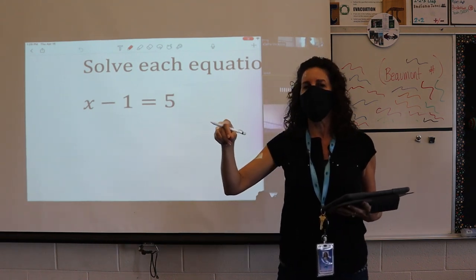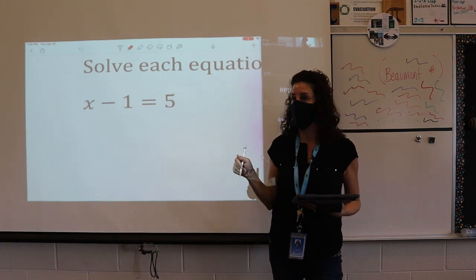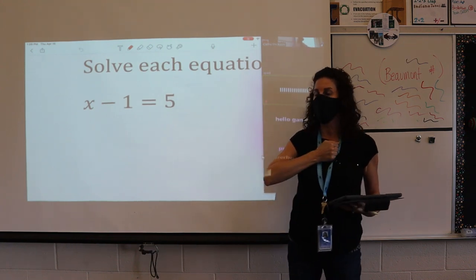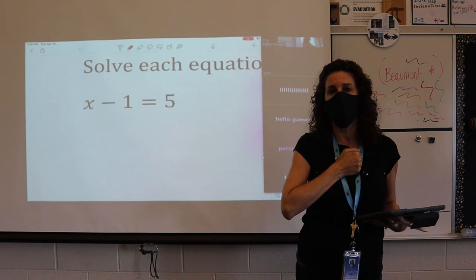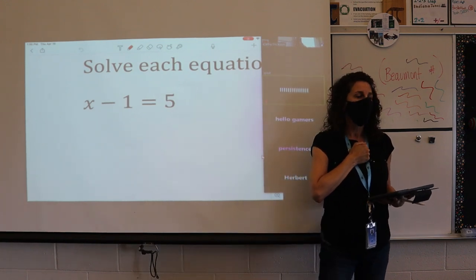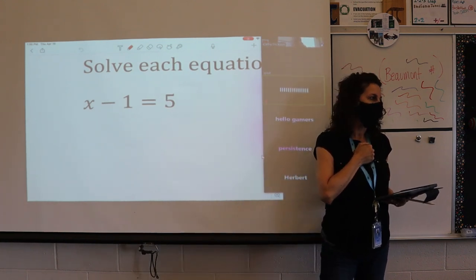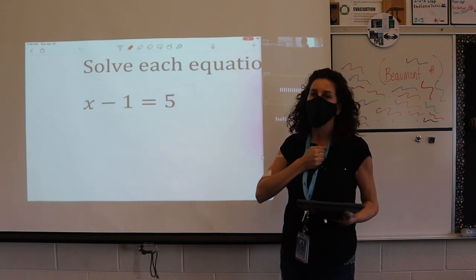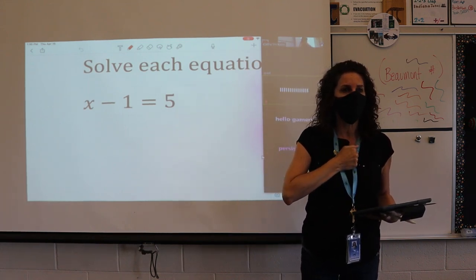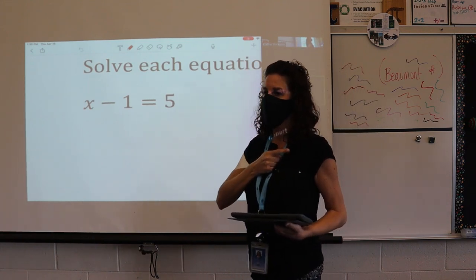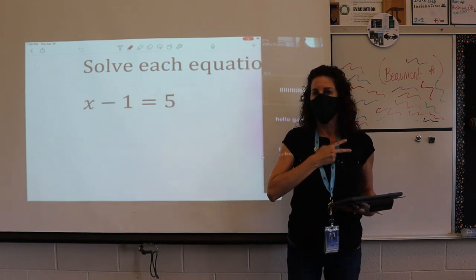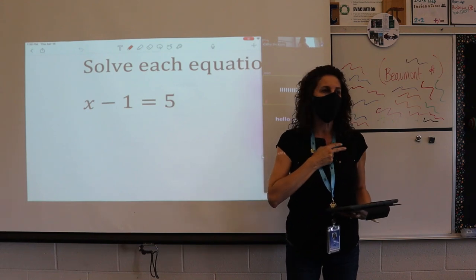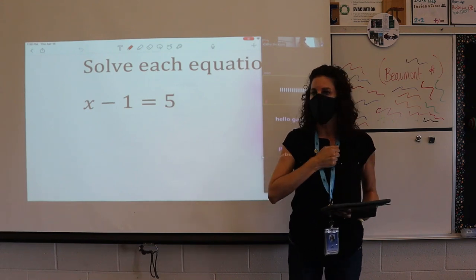I want you to think about how this number talk is similar to the one in lesson four or different. This one's fist to chest. So if you're at home, you're going to raise your hand using the emojis or the reaction tool so that I know that you have something to participate. When we have a strategy, we're going to show that we have a strategy. If we have another way to do it, we're going to show two fingers. All right, the first one is x minus 1 equals 5.